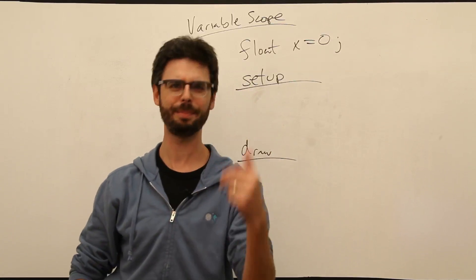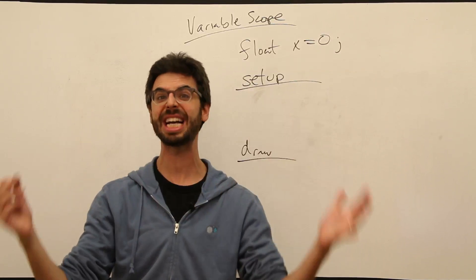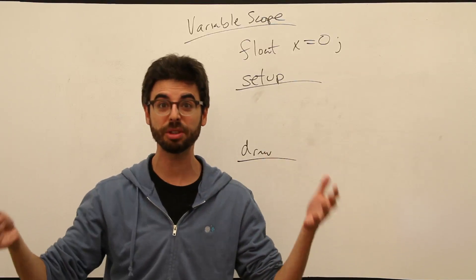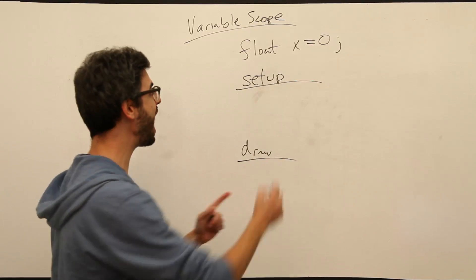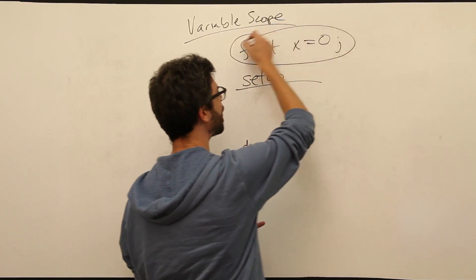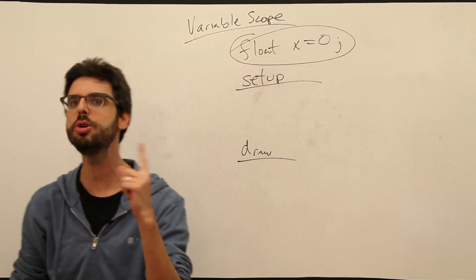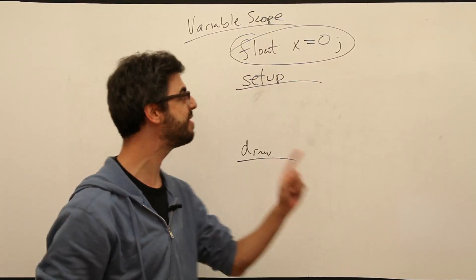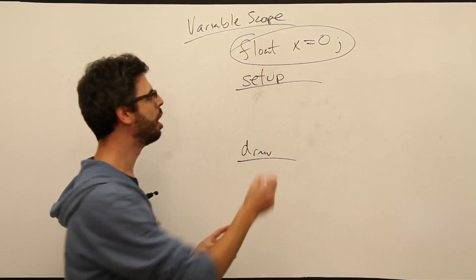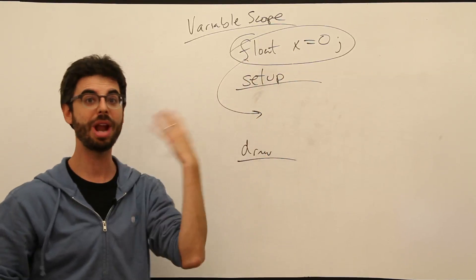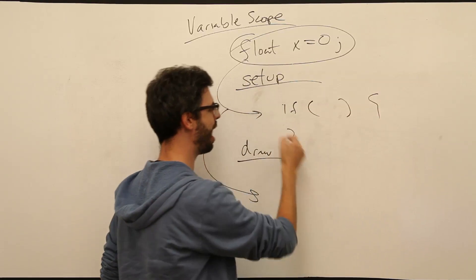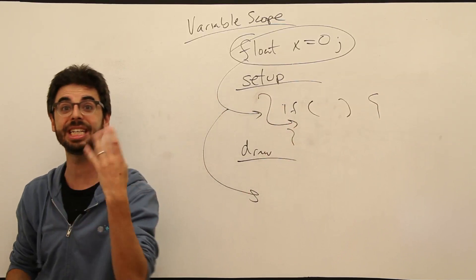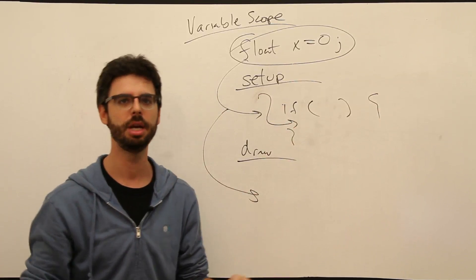We always put our variables at the top of the code, or so we thought. But I'm sure you've seen examples, or maybe by accident, you've actually put your variables somewhere else. What we're talking about with variable scope is what happens when we start to declare our variables, not use them. By declare, I mean give them a name and a type somewhere else in our code. What happens if we put them in setup? What happens if we declare them in draw? What happens if we have a conditional statement and we declare a variable inside a conditional statement? What does that mean?